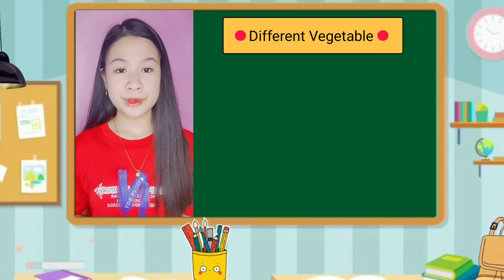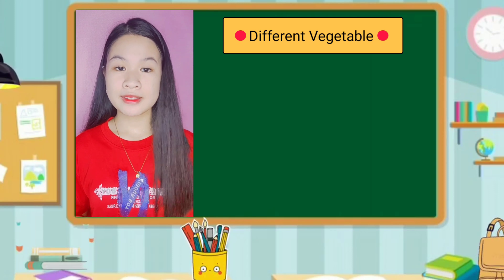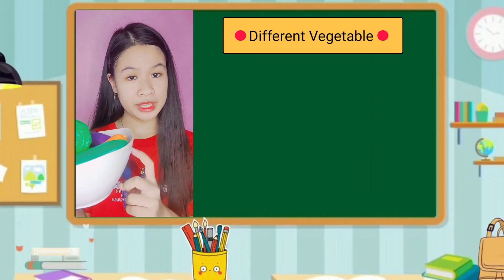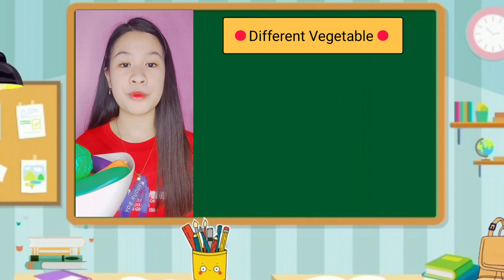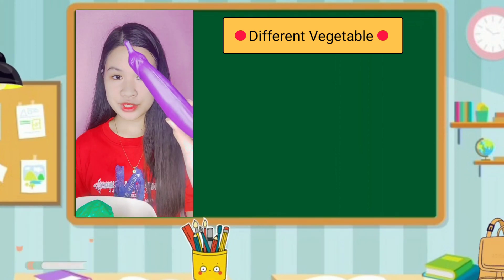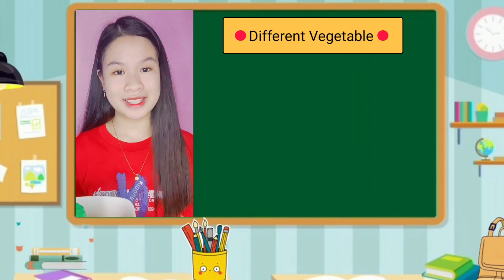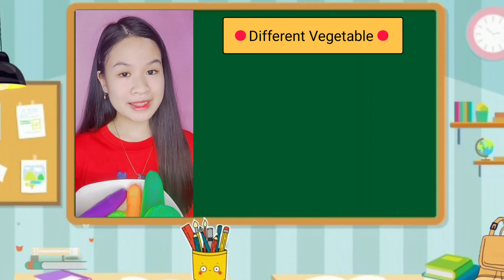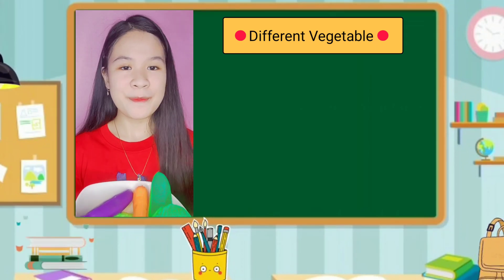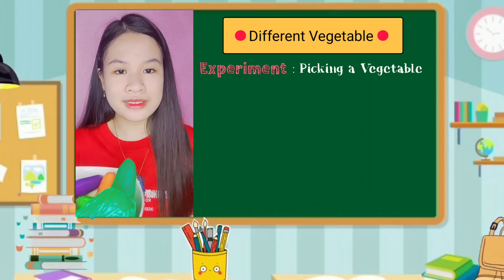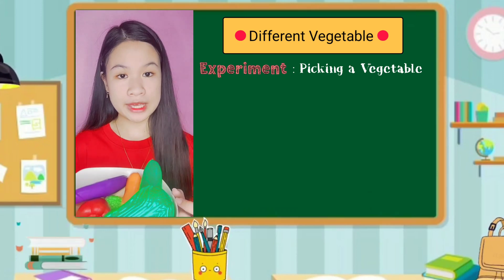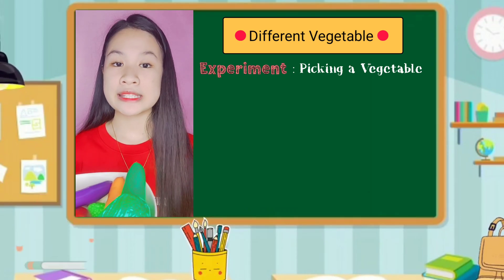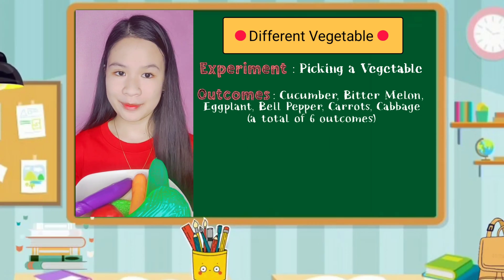What I am going to do is put these vegetables inside the container and pick one vegetable at a time. That will be our experiment — picking a vegetable. Since there are 6 different names of vegetables, therefore there are 6 possible outcomes.